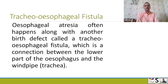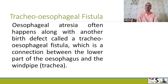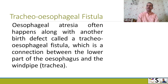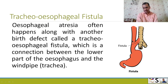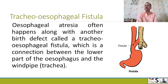Next is tracheoesophageal fistula, or TEO fistula. Esophageal atresia often happens alone or with another birth defect called tracheoesophageal fistula, which is a connection between the lower part of the esophagus and the windpipe or trachea. The food pipe can communicate with the trachea — a fistula or communication is formed between the trachea and esophagus. This is also a serious disorder.